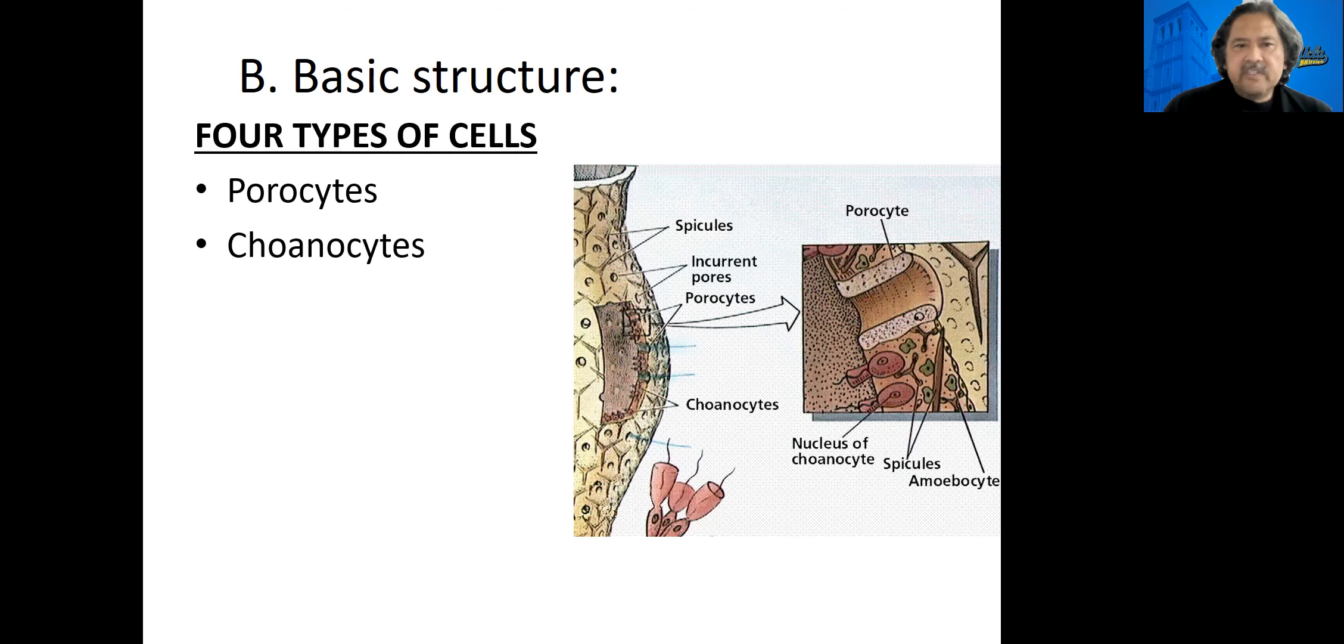The next cell is called the collar cell or choanocyte, and the collar cell has a little cuff to it. It has a collar, like my shirt has a collar. In that collar gets stuck food, so choanocytes are where the food is captured. Also coming from the choanocyte is this tail, this flagellum, which as it beats back and forth, the water flows only into the pore site, and then it goes out through the osculum right there.